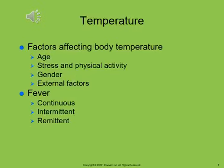Body temperature is defined as the balance between heat loss and heat produced by the body. The temperature of younger children fluctuates due to external factors, and older individuals lose the ability to respond therapeutically to temperature extremes. Factors affecting body temperature can be age, stress and physical activity, gender, and other external factors.